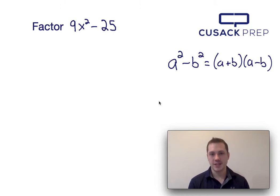Now I know I can use the difference of squares equation because both 9x squared and 25 are perfect squares, and we're taking the difference of them.